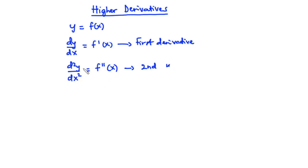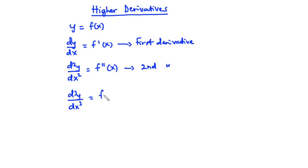In the same way, if we differentiate d²y over dx² with respect to x, then we get d³y over dx³, which is the same as f triple prime of x. This is called the third derivative of y with respect to x.